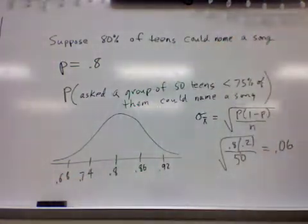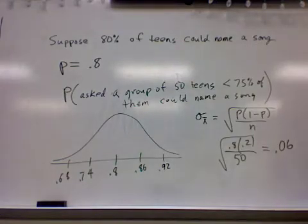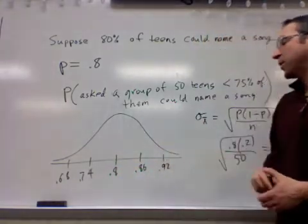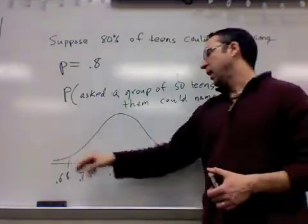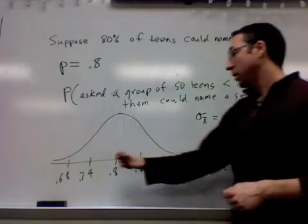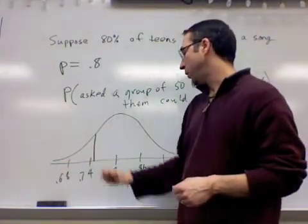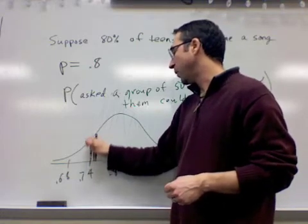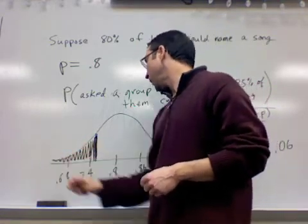If we had groups of 50 teens, there's a 95% chance that between 68% to 92% of those students would know a song that she sings. The question is asking, what's the probability that it would be less than 75%? So we're looking at this part of the curve, less than 75%, from 0.75 backwards.